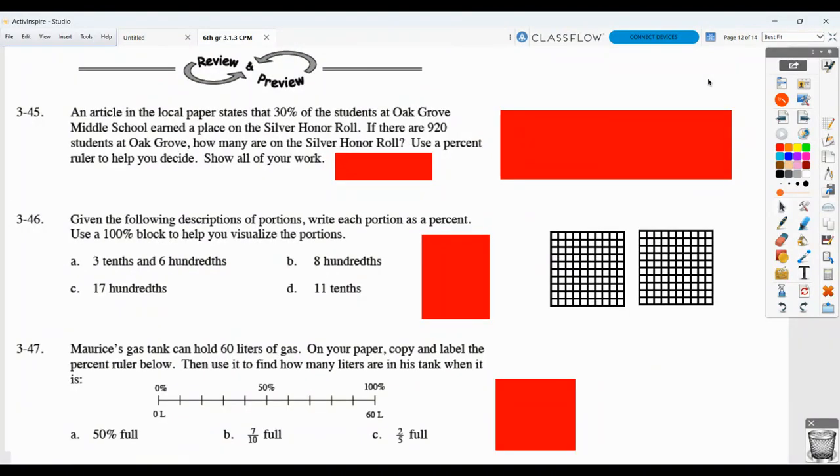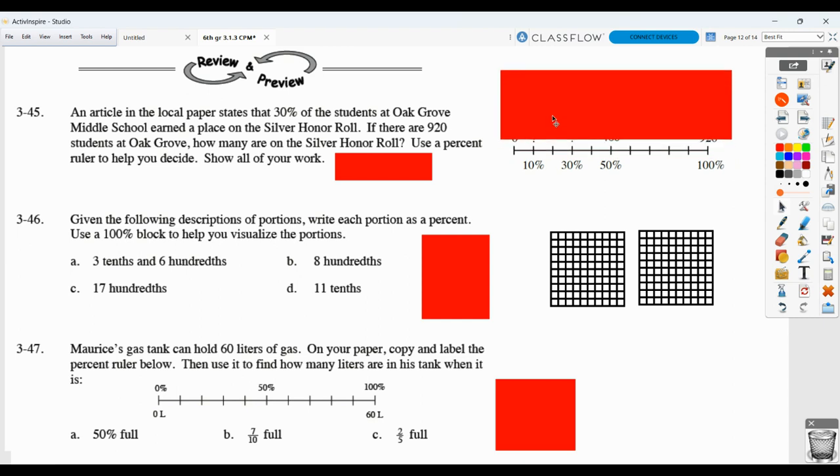These are videos to allow you to correct your homework for section 3.1.3. An article in the local paper states that 30% of the students at the school earned a place on the silver honor roll. If there are 920 students at Oak Grove, how many are on the silver honor roll? And they want you to use a percent ruler. So remember the idea with a percent ruler,